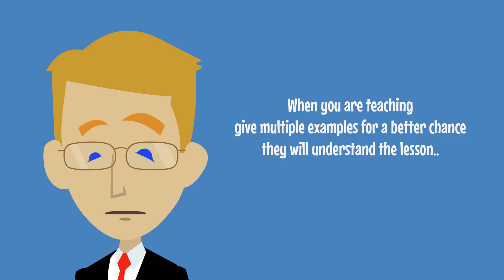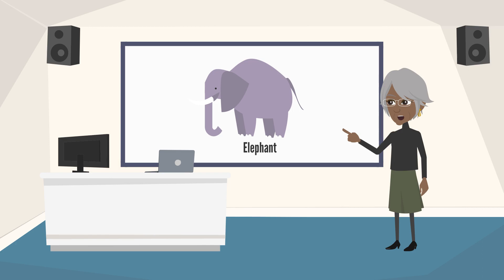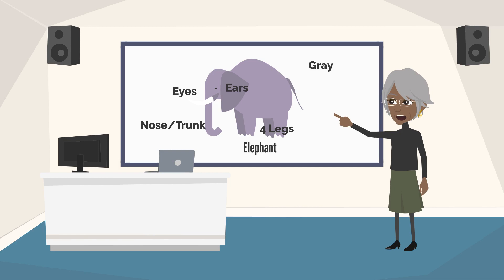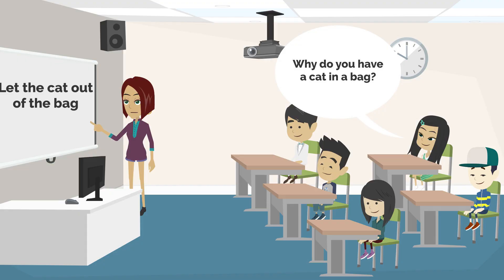When teaching, give multiple examples for a better chance that students will understand the lesson. If a teacher says 'an elephant has four legs' and the students look confused, draw or show a picture of an elephant and point at the legs. When students see an elephant, they understand what the word 'elephant' means, and then can understand legs, body parts, eyes, nose, ears, colors, and numbers. You can later teach idioms — like 'letting the cat out of the bag.' Students may ask what you're talking about. The best way to teach idioms is to write on the board the idiom and its meaning: 'let the cat out of the bag = to tell a secret.'